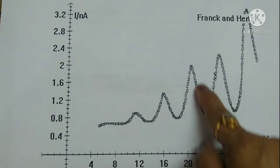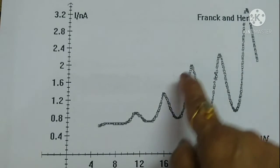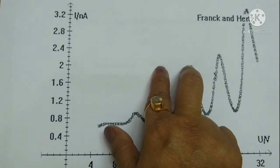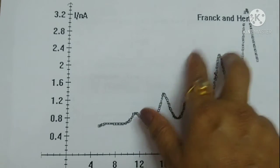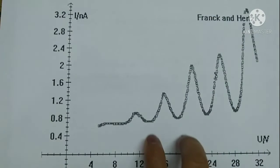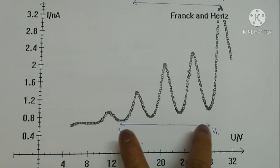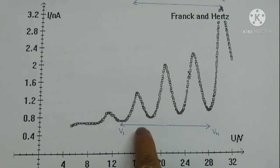The graph comes out to be this. We can see a number of maximas and minimas. Here we can also observe that the difference between two consecutive maximas is the same, and similarly between two consecutive minima is the same.